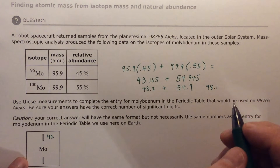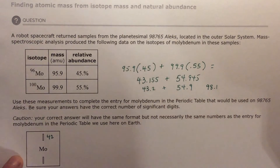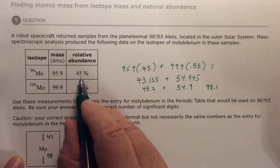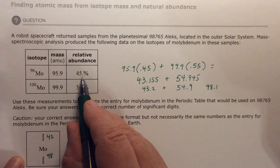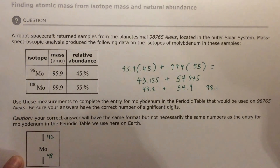So that would be here — 98. My spidey senses say 98, not 98.1. Let's see why — this is two significant digits. See the decimal point here? That's two significant digits, so I would round to two significant digits. So this is molybdenum-42, and it's called molybdenum-98 with an atomic number of 42. Thanks.